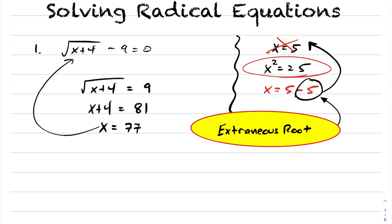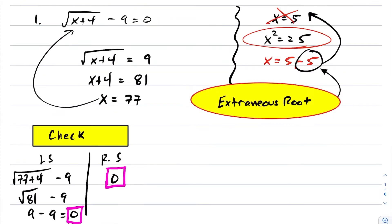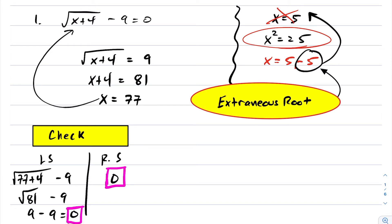We can now check this in the original equation to ensure it satisfies it. Substituting 77 into the left-hand side, we get 0, and the right-hand side is obviously always equal to 0. So the solution to this equation is x equals 77, with no extraneous roots.